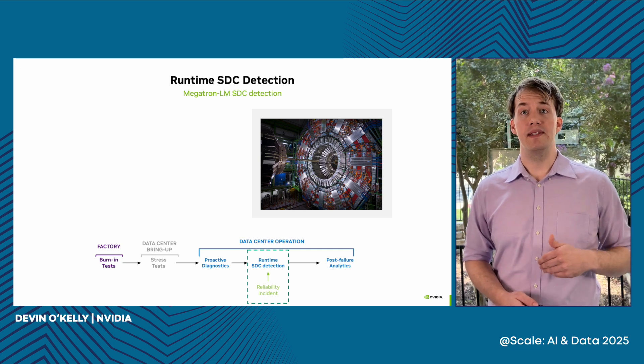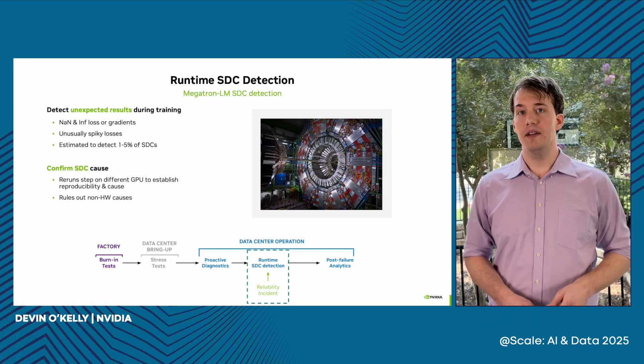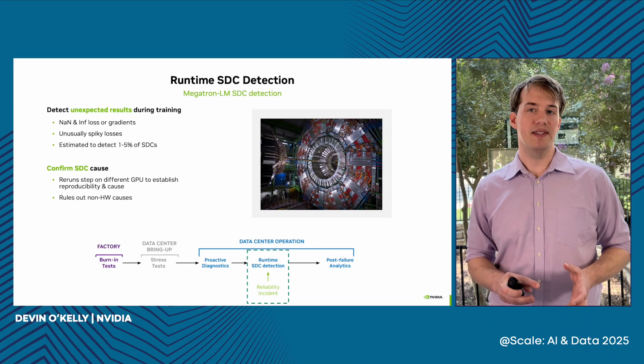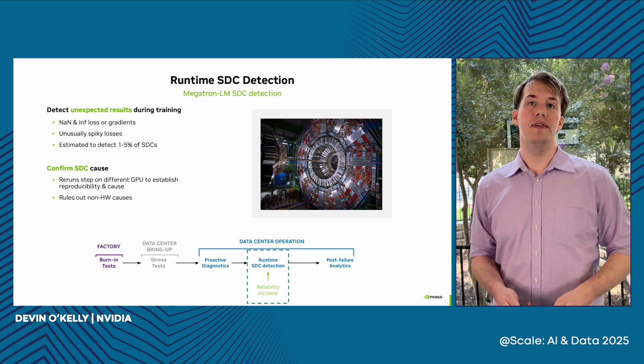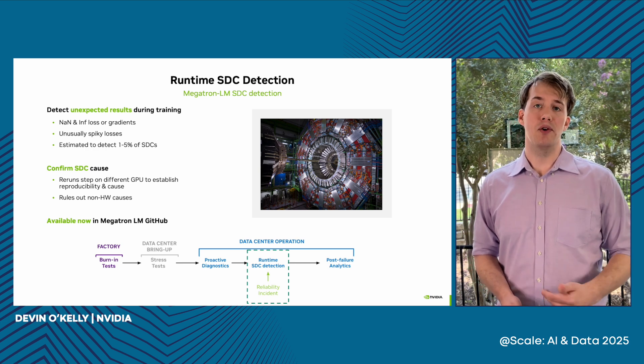The next line of defense takes place the moment an SDC happens. All the measures so far intend to catch defective GPUs before they fail. The goal here is to catch and mitigate SDCs at runtime — when they happen and before they can propagate and cause problems in downstream training. One way to do this is to detect numeric explosions such as infinite and not-a-number loss or gradients during training. When an error is detected, the training step that triggered the error is rerun on a different GPU to determine whether the error is reproducible. If it cannot be reproduced, we can safely attribute it to an SDC. This disambiguation process has been added to Megatron, NVIDIA's open-source framework for large language model training, and is currently available for public use.